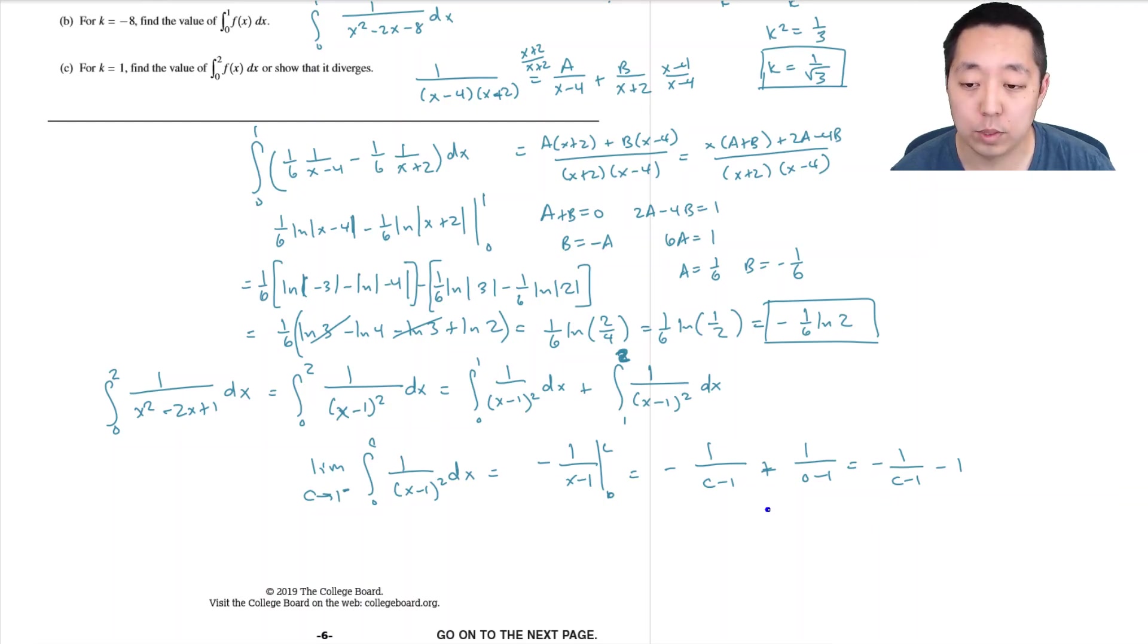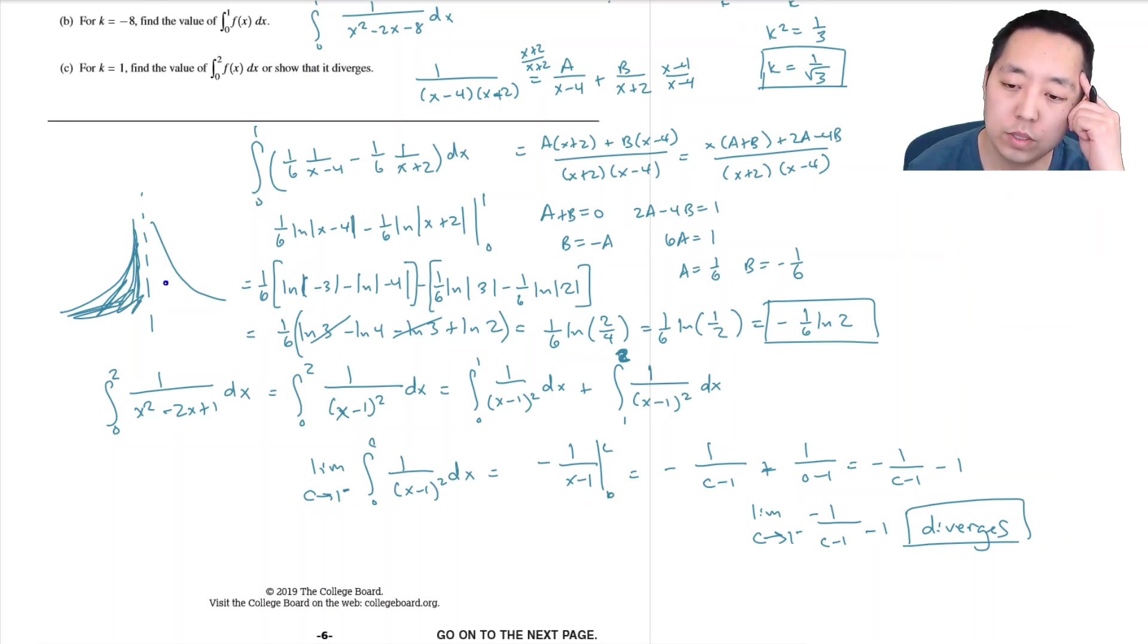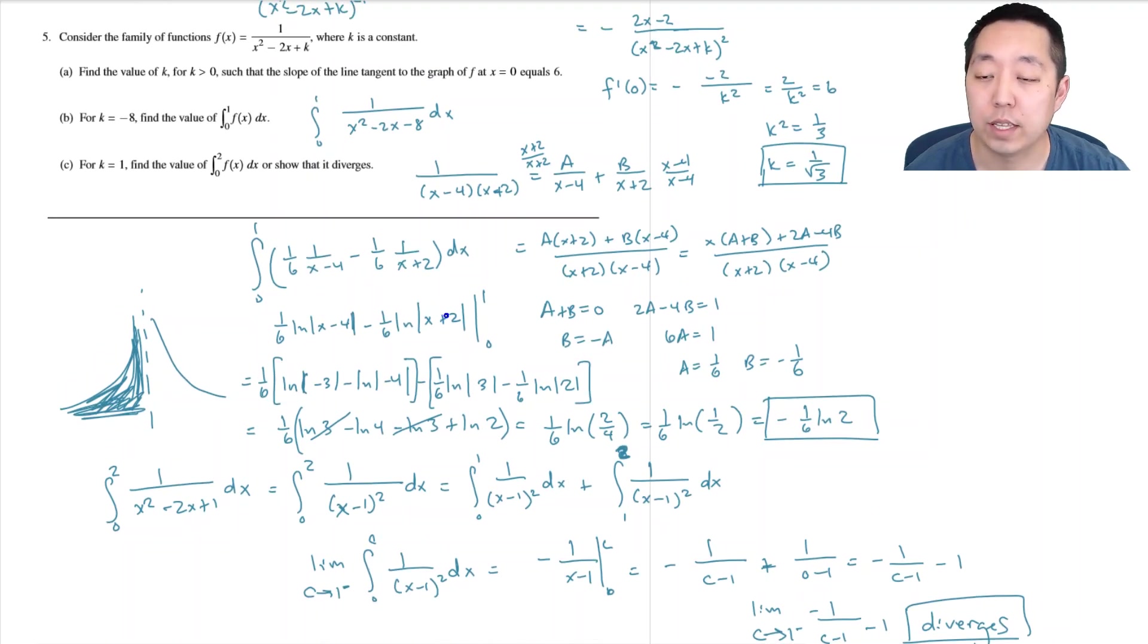The limit as c approaches 1 of this - this diverges. This area here diverges, and it's actually symmetric - 1 over (x minus 1) squared looks kind of like this and is centered at 1. So this area diverges, and this area would also diverge if you did the exact same thing. So the sum of the two areas are going to diverge. There's no canceling happening.